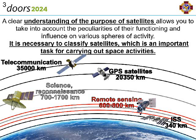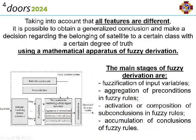Under such conditions, classification features obtained from both a priori and a posteriori information about satellites can be numerical, categorical, or linguistic. Taking into account heterogeneous features requires the use of an appropriate mathematical apparatus, which will allow them to be formalized for the further classification of satellites, which is a current scientific task.